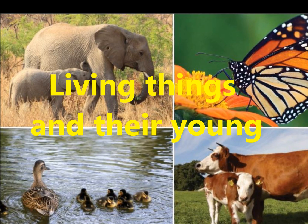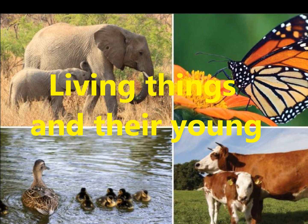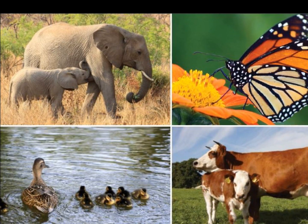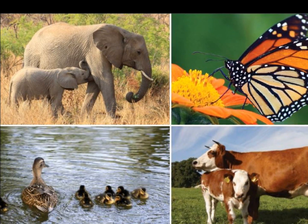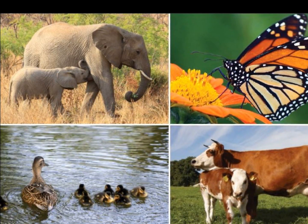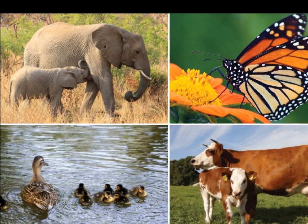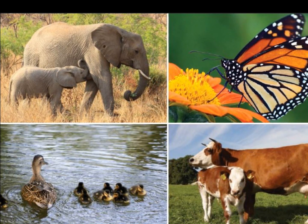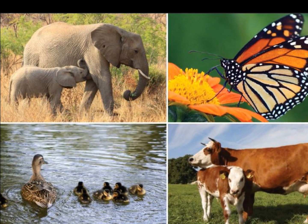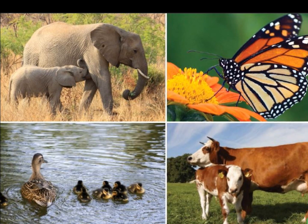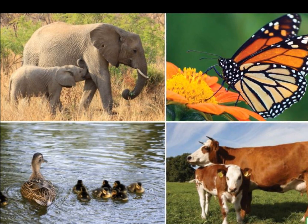All living things are part of a cycle of life that keeps going around and around. What does this mean? It means that almost all living things are born, grow, reproduce or make babies, and eventually die.